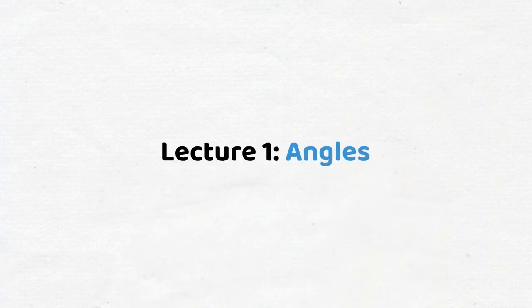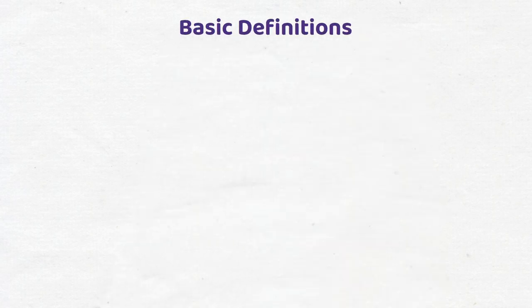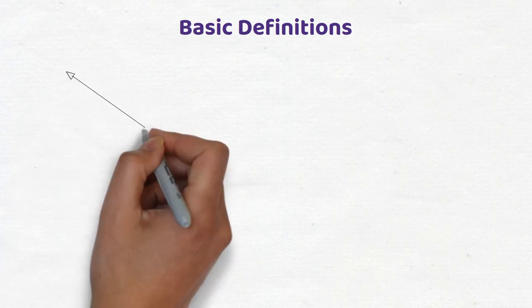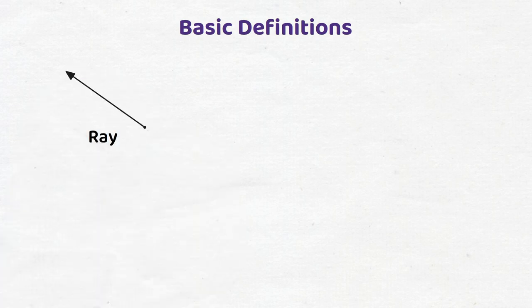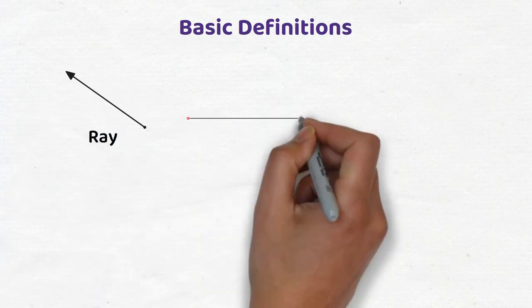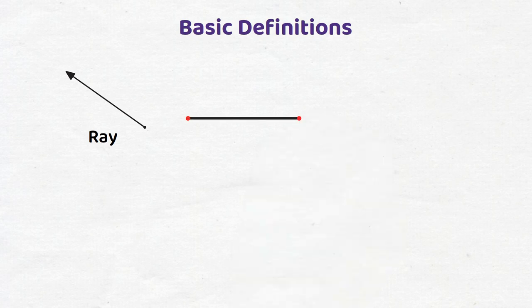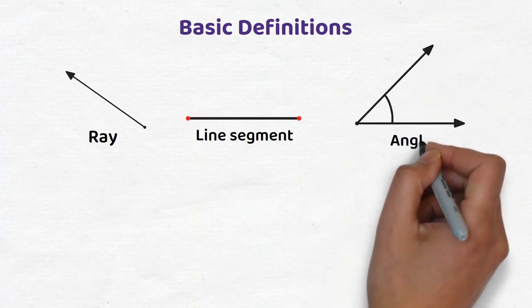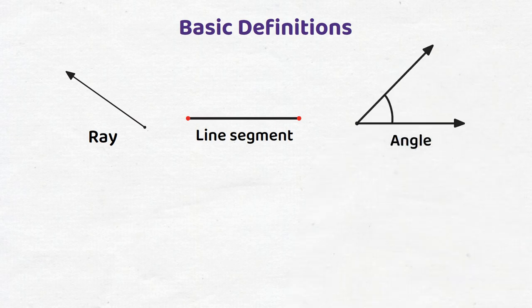Lesson 1: Angles. Basic definitions. A ray is a line with a starting point extending in one direction. A line segment is a part of a line with two endpoints. An angle is formed by two rays, or two line segments, which have a common initial point.